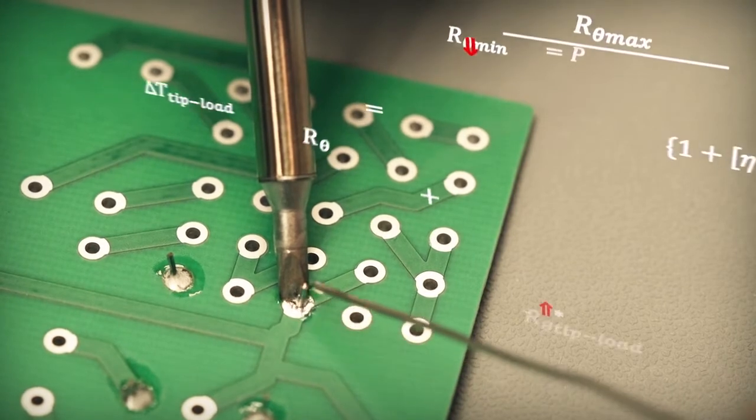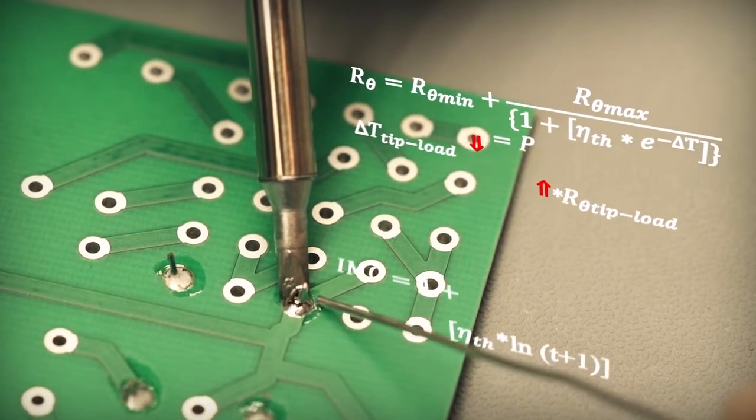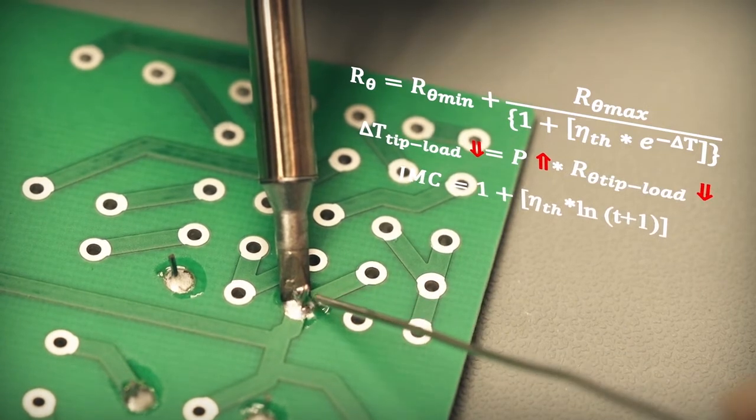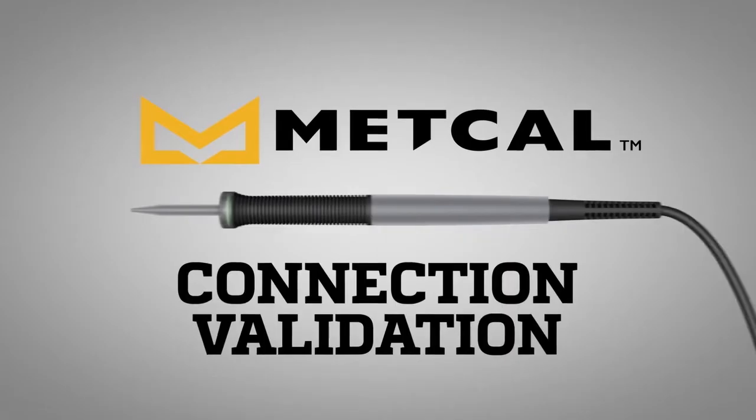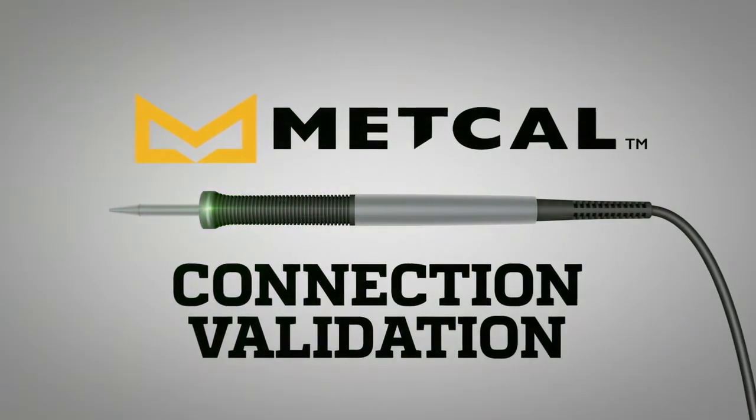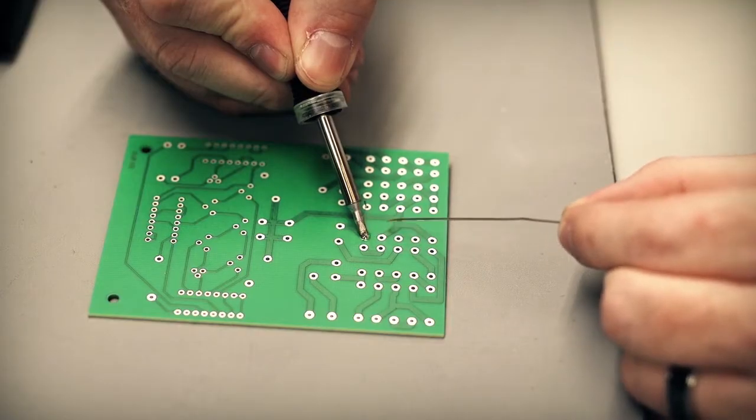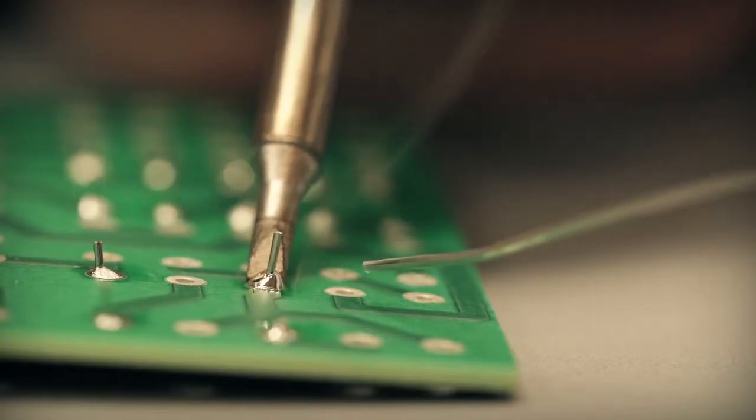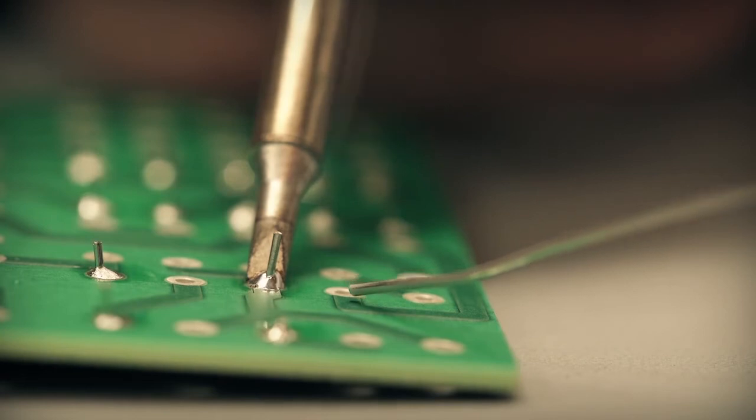Metcal's patented technology incorporates a complex algorithm and hardware solution to calculate the IMC as a function of power over time. Connection validation provides feedback to the operator via the light ring embedded in the handpiece. Successful intermetallic compound formation triggers a green light signaling to the operator that the ideal solder joint is created.